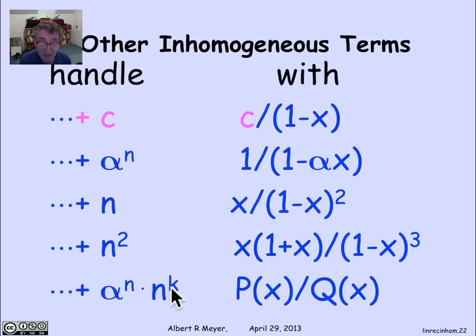And more generally, we can handle any inhomogeneous term of the form alpha to the n times n to the k, where k is a fixed constant like n squared or n cubed. And of course, that means that once I have these, I can also handle any sum of these, which means I can really handle alpha to the n times any polynomial, and a sum of those for different alphas and different polynomials. And all of those get handled by using a suitable quotient of polynomials to handle the generation of the inhomogeneous terms that I need as coefficients of the powers of x. So that's the general story for handling a pretty decently large class of inhomogeneous linear recurrences.